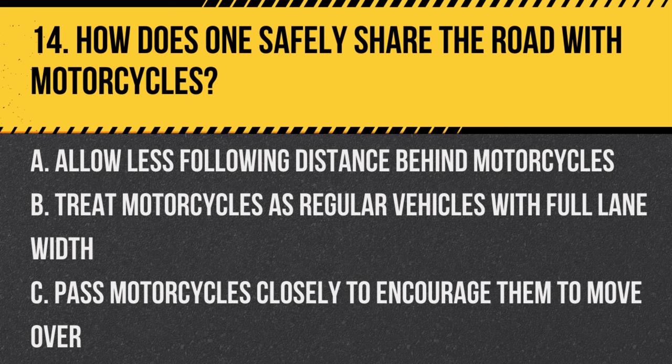Question 14. How does one safely share the road with motorcycles? A. Allow less following distance behind motorcycles. B. Treat motorcycles as regular vehicles with full lane width. C. Pass motorcycles closely to encourage them to move over. Answer: B. Treat motorcycles as regular vehicles with full lane width. Motorcycles should be given the same respect and space as other vehicles.